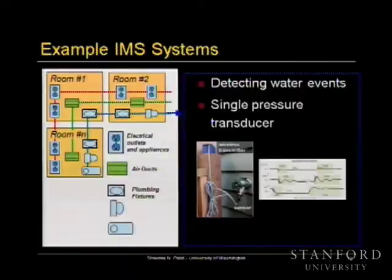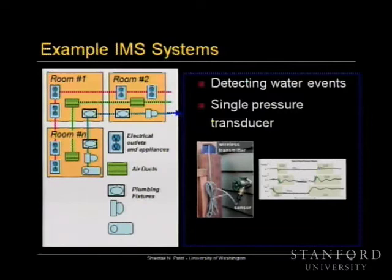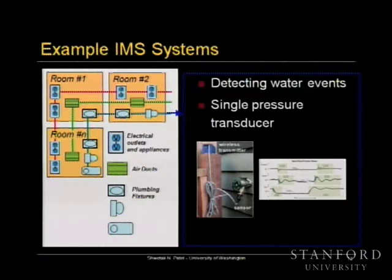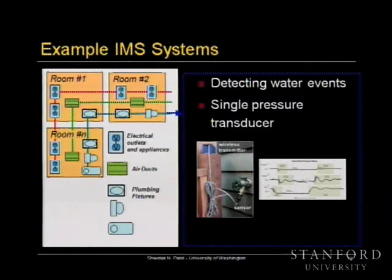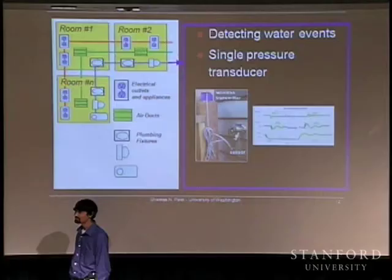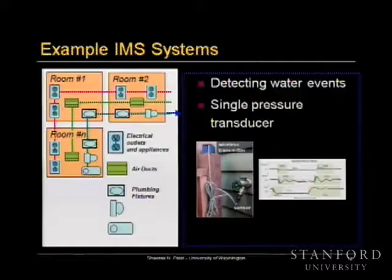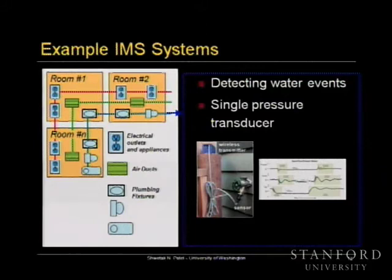We've also moved to the plumbing infrastructure. With a single sensor, can you figure out what fixture is being activated and how much water is being consumed? Same idea — non-expert installable, no plumber cutting into pipes. A single sensor gives you similar information to having an inline sensor behind every fixture. Each valve has a noise signature over the plumbing infrastructure that we can isolate and classify — figuring out not just what device it was, but whether it was the toilet in the master bath or the guest bath.